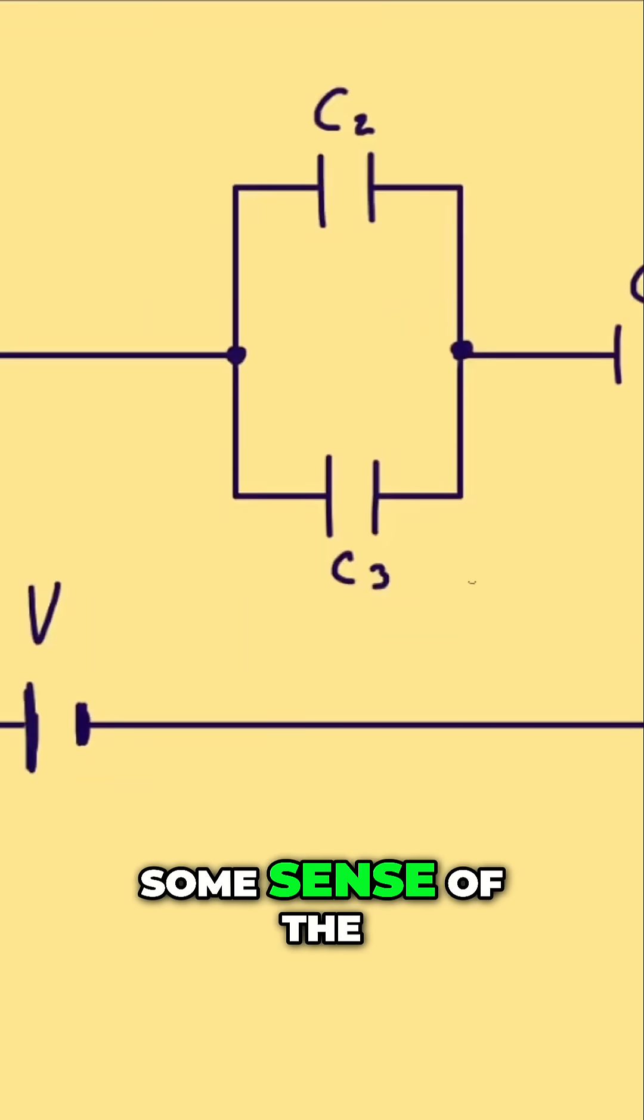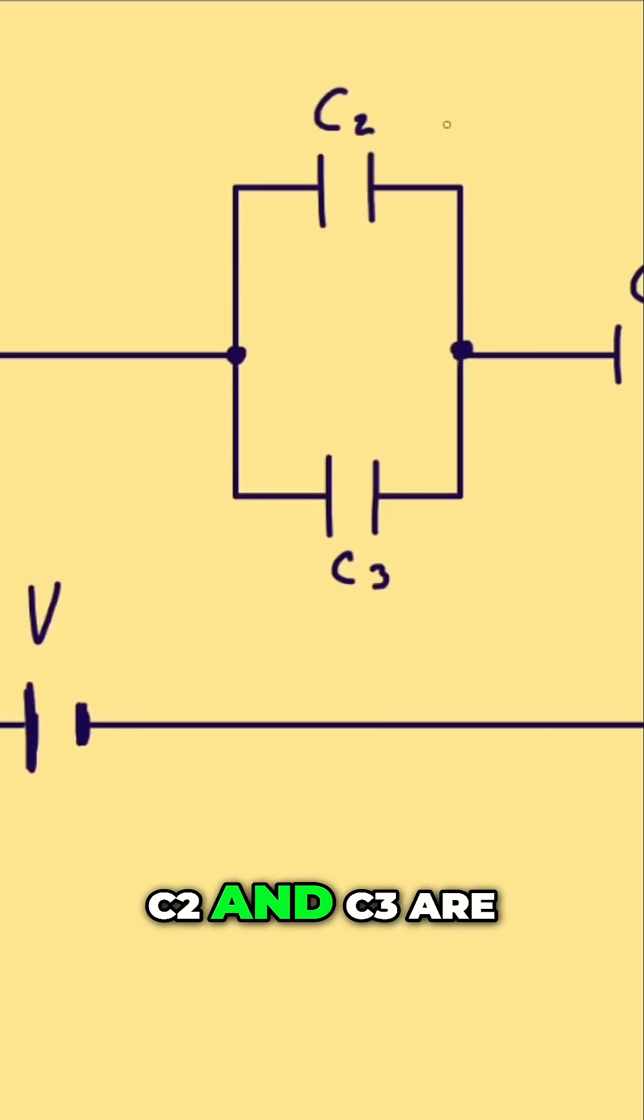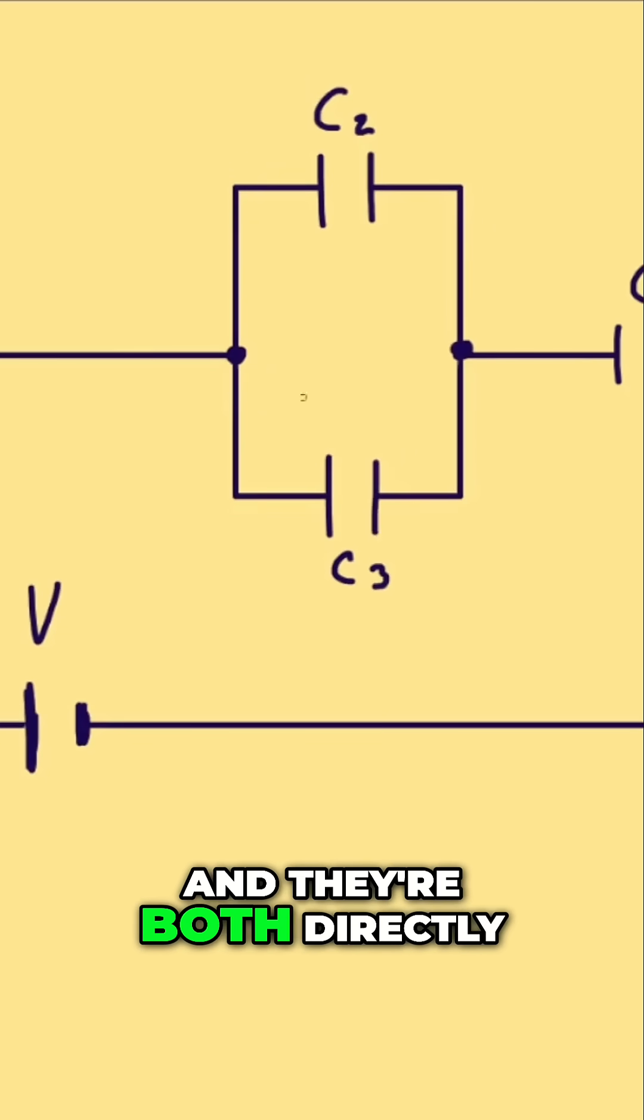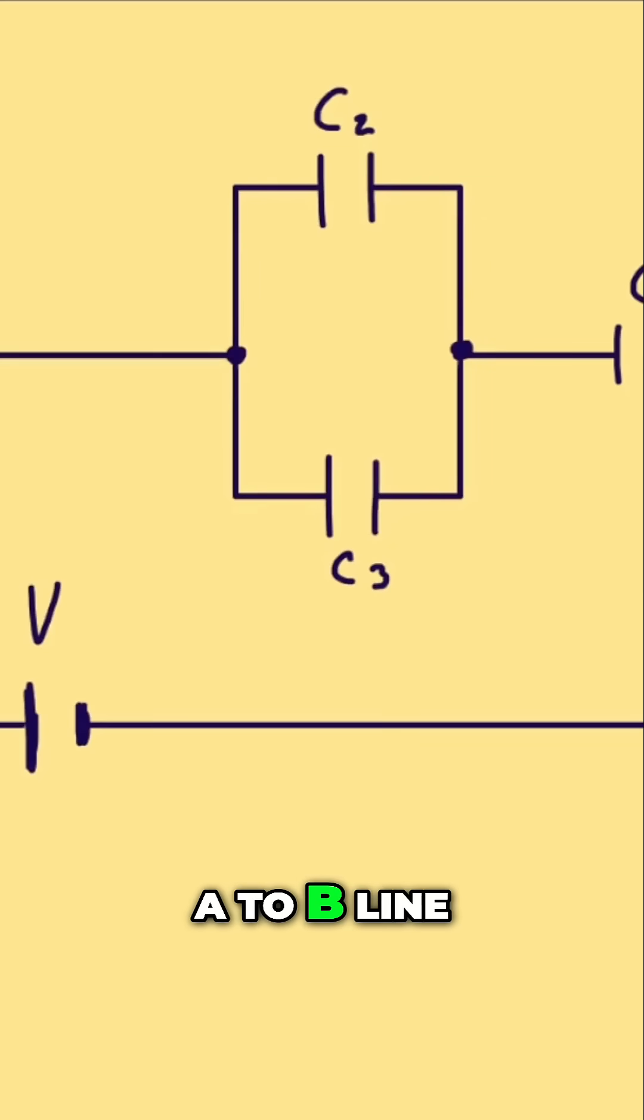Let's go through an example problem to make some sense of the stuff that I just told you. C2 and C3 are connected in parallel, and they're both directly connected across this A to B line.